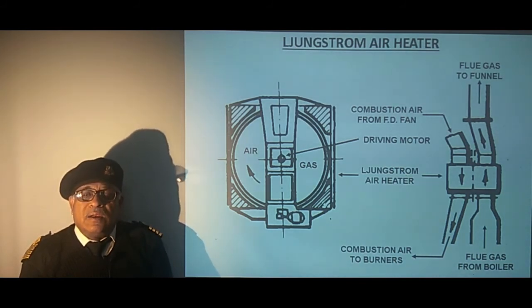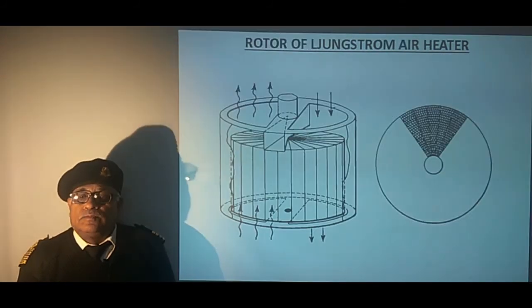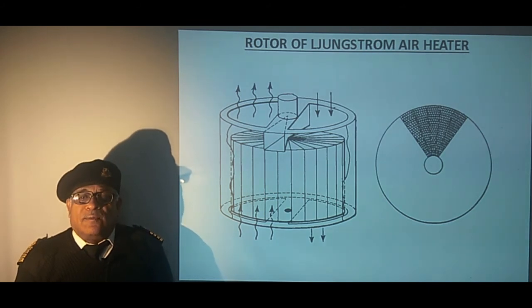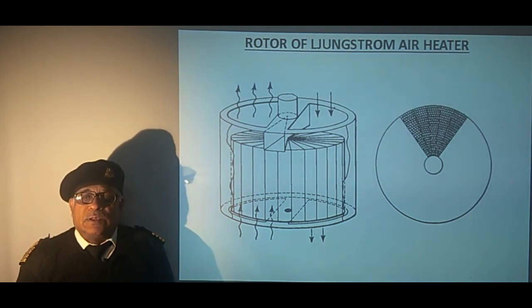The following slide shows the drum internal arrangement. The drum consists of close pitch thin plates which provide large surface area for heat exchange to take place. The plates absorb heat while passing through the flue gas stream and give up this heat when it moves to the combustion air passage. Fine clearance between the stationary and the moving parts limit the mixing of two fluids. So we can see the nomenclature.